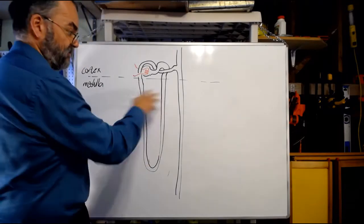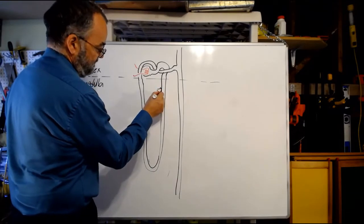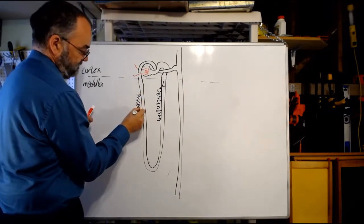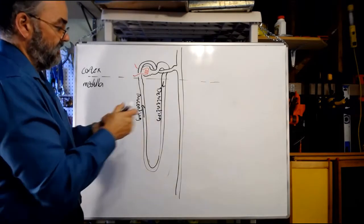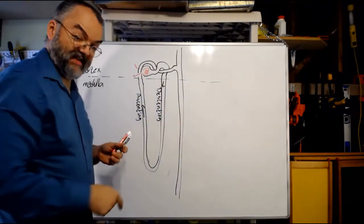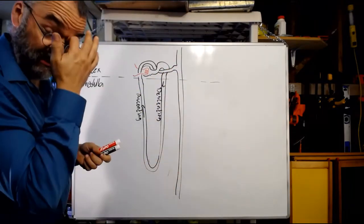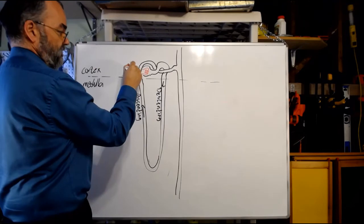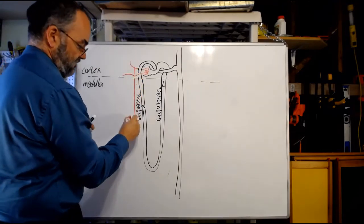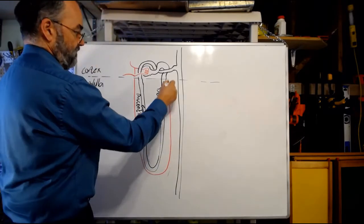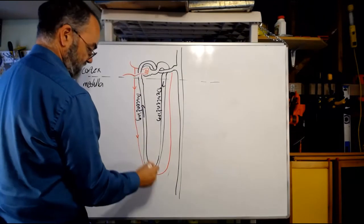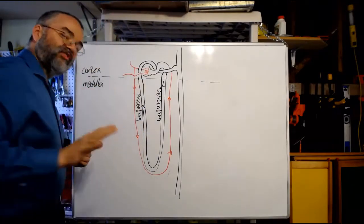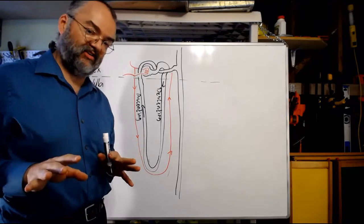That's going to hook on to a collecting duct, which is now carrying the stuff that's going to be urine down toward the renal pelvis. Notice our descending limb and our ascending limb — it's important that you have these in the right orientation. The descending is where the fluid's going downward, and the ascending limb is where it's heading back up. It's important that the descending limb is near this collecting duct, where the filtrate is moving down toward the renal pelvis. These special blood vessels — the vasa recta — come off the efferent arteriole and head down along the ascending limb and then up.